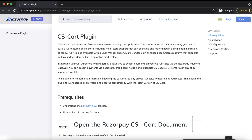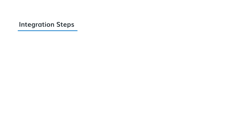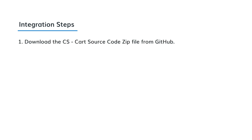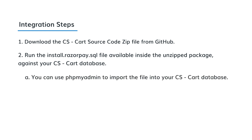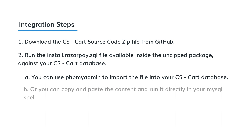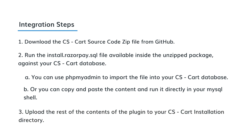Open the CS cart document on razorpay.com/docs for quick reference. You must complete the following integration steps: download the CS cart source code zip file from GitHub, run the install.razorpay.sql file available inside the unzipped package against your CS cart database. You can use phpMyAdmin to import the file, or copy paste the content and run it directly in your MySQL shell. Finally, upload the rest of the contents of the plugin to your CS cart installation directory.